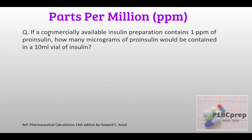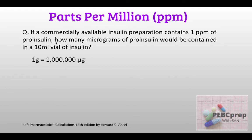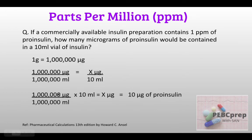Next question: if a commercially available insulin preparation contains 1 ppm of pro-insulin, how many micrograms of pro-insulin would be contained in 10 mL? Since the question asks for micrograms, we first convert: 1 gram equals 1 million micrograms. We put our values — since it is 1 ppm, instead of writing 1 gram we express it in micrograms.